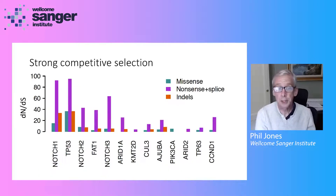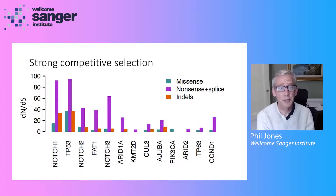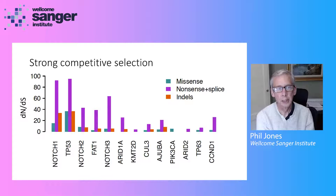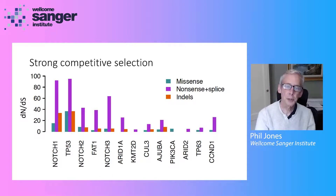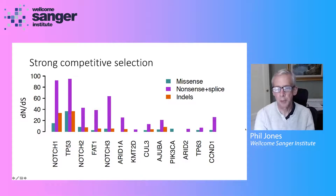When we look at the genes that are prevalent in the esophagus, we can see very strong competitive selection. For nonsense mutations in Notch1 and TP53, the ratios are approaching 100. Alongside these very strongly selected genes, we have a tail of multiple examples of other more weakly selected mutants.